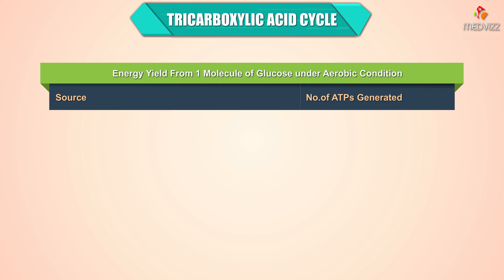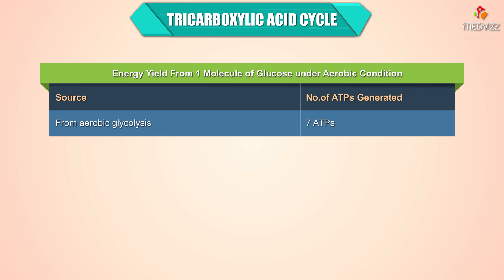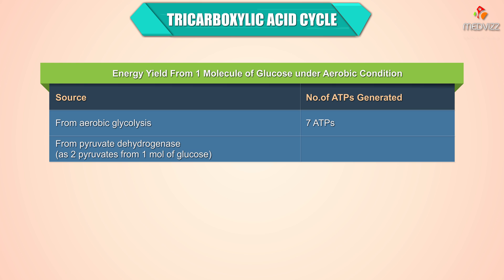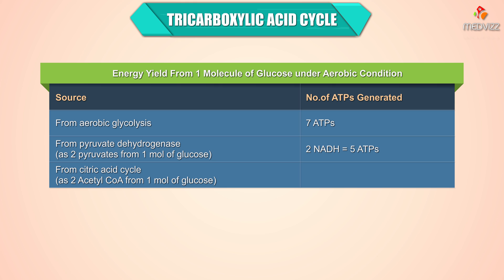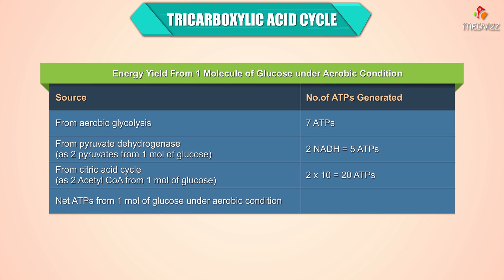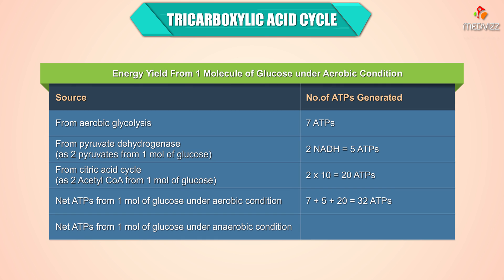Energy yield from one molecule of glucose under aerobic conditions: from aerobic glycolysis, 7 ATP are generated. From pyruvate dehydrogenase, 2 NADH equals 5 ATP. From the TCA cycle, since 2 acetyl coenzyme A are produced from one molecule of glucose, the yield is 2 times 10 equals 20 ATP. Net ATP from one molecule of glucose under aerobic condition is 7 plus 5 plus 20, which equals 32 ATP. Under anaerobic conditions, net ATP is 4 minus 2, which equals 2 ATP.